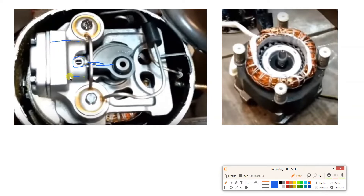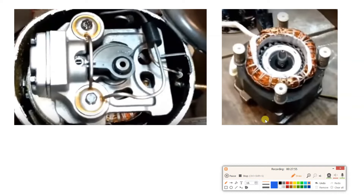Now we will see a small video to observe and understand the working of this refrigerator compressor. The refrigerator has all four components: compressor, condenser, expansion device, and evaporator. We will see the compressor part.